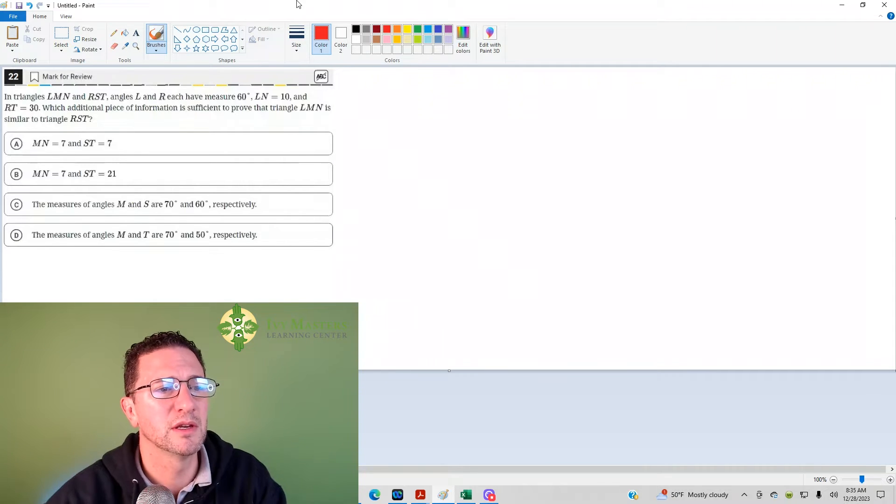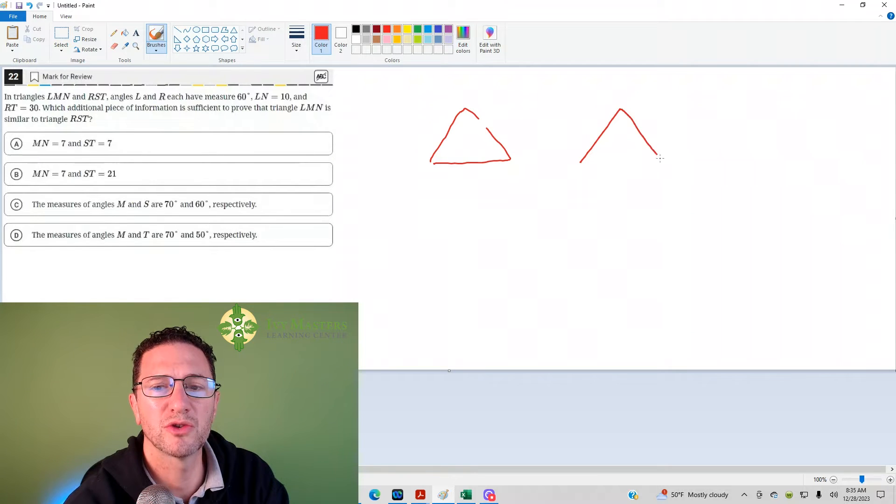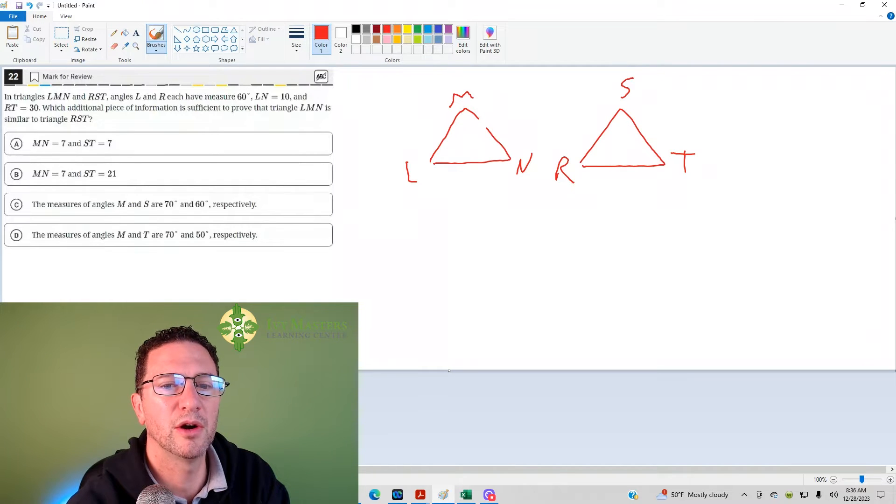Number 22 reads: triangles L, M, N, and R, S, T - angles L and R each have a measure of 60 degrees. So what do you do? Any time there is something you can draw, just draw it. So label this L, M, N, and R, S, T. L and R are 60, 60.